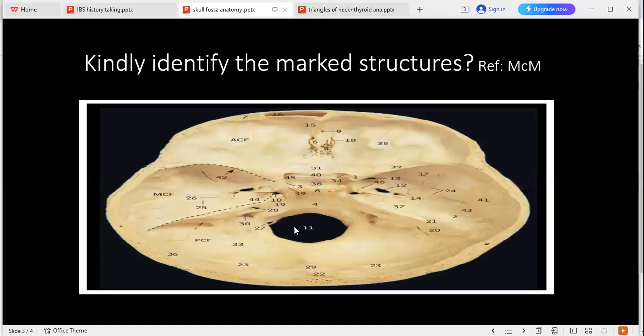What is number 11 please? Foramen magnum. Please tell me the contents of number 11. It will contain anterior and posterior spinal arteries, right and left vertebral arteries, lower end of the pons, the spinal accessory nerve, lower end of medulla oblongata, apical and tectorial membranes.